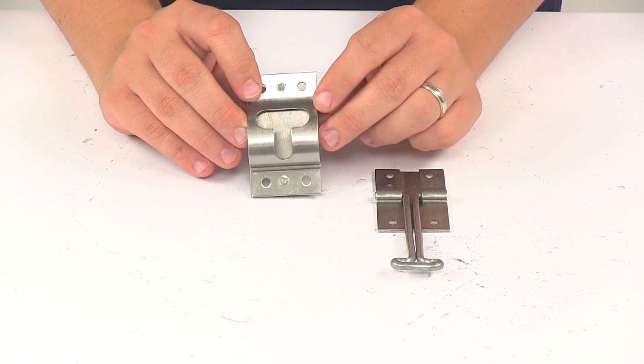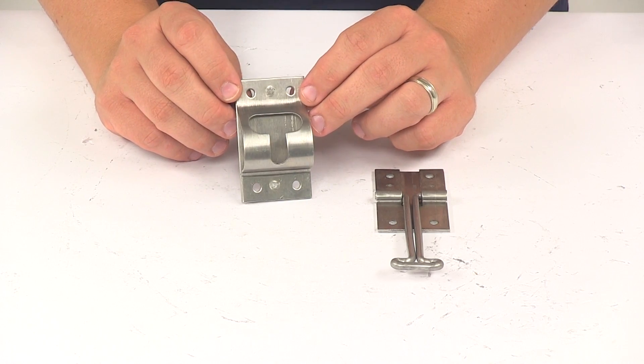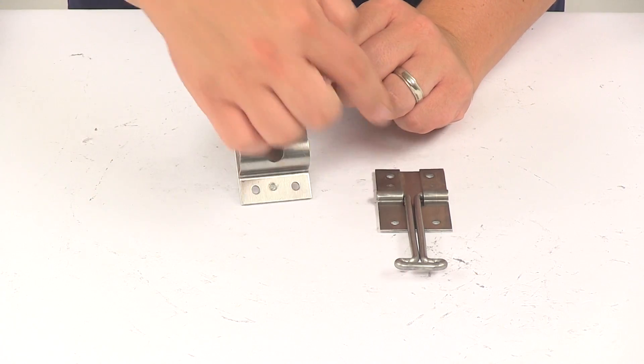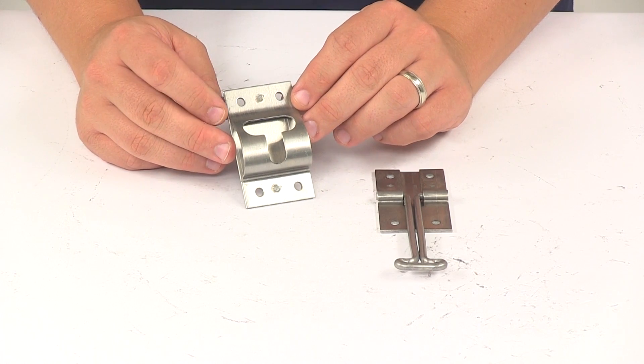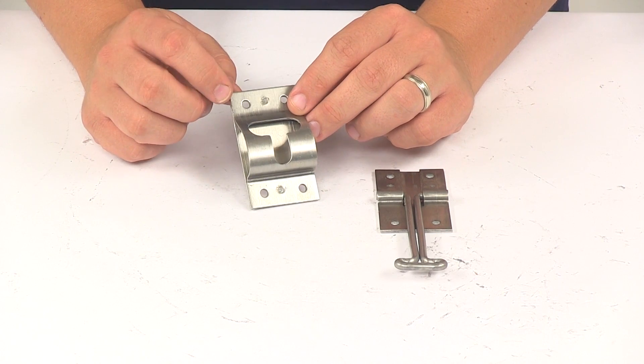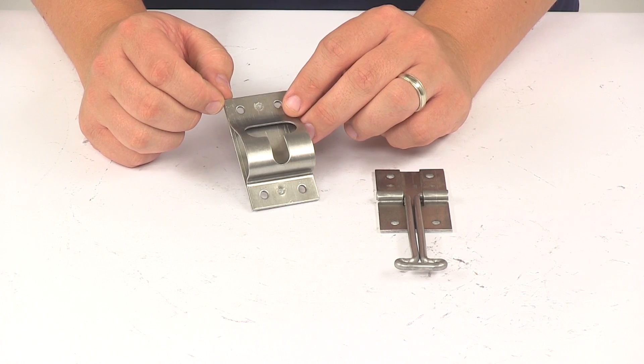Now each piece is going to feature pre-drilled mounting holes. These are designed for a total of eight number 10 mounting screws. Those are not included, so they will need to be provided separately. The mount holes on the unit will accept 3/16 inch diameter hardware.